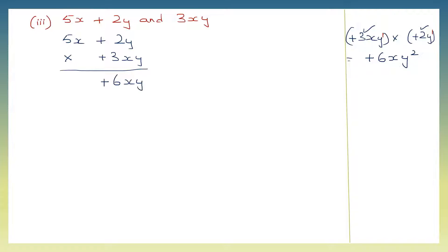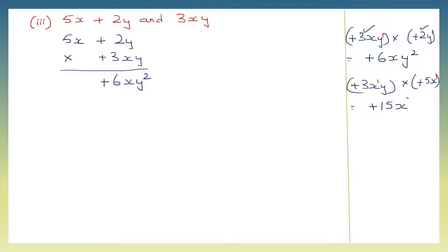Now I'm going to multiply plus 3xy into plus 5x. First multiply the signs: plus into plus is plus. Then the numbers: 3 fives are 15. Then the variables: x into x — there is 1x here and 1x here, so that will make it x to the power of 2. y is by itself. So I get plus 15x squared y.